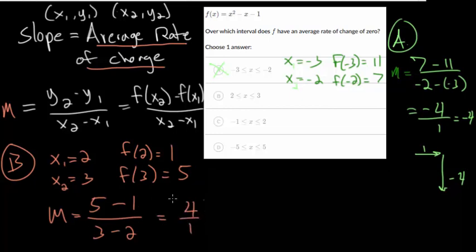But again, this is not an average rate of change of 0. This means for every 1 we go over, we're going to go up 4 units on average between an x value of 2 and 3. So it's not b.